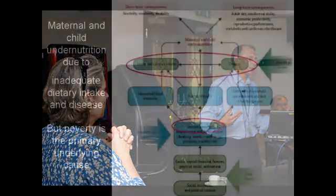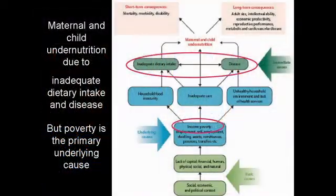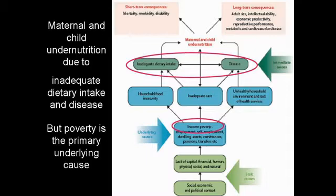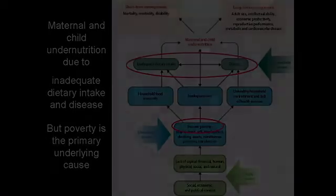This is a very famous slide which shows you the interactions between these three. You can see that there are background causes at the very top, leading to undernutrition. Going through underlying causes and then up to the immediate causes above that. The important thing to focus on initially is that undernutrition is a dual function, caused by the combination of inadequate dietary intake and also disease.